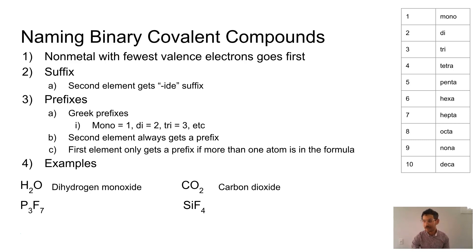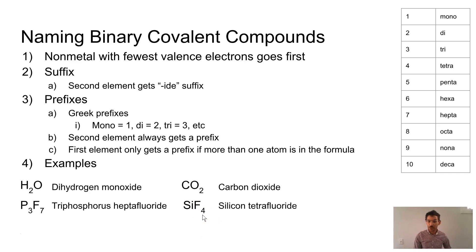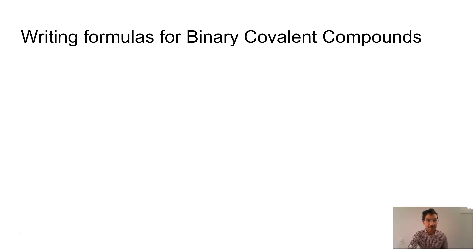Cool. We're looking at our next example. I already went through this one, but it's triphosphorus heptafluoride. And then looking at this one, well, there's one silicon. So we're not going to put a prefix on it. And then fluoride will become tetrafluoride because there are four of those. So silicon tetrafluoride, nifty, nifty.